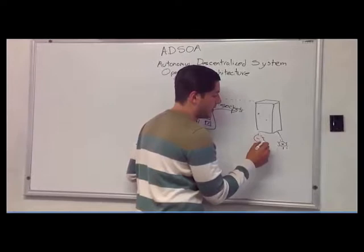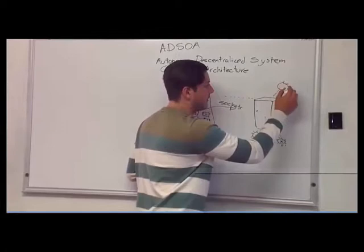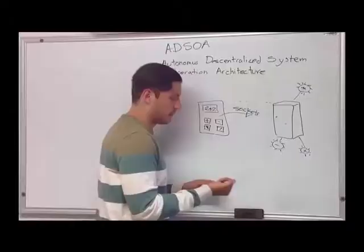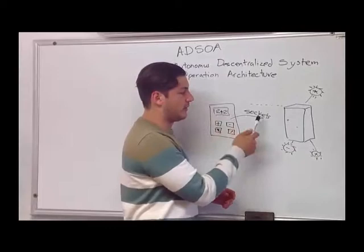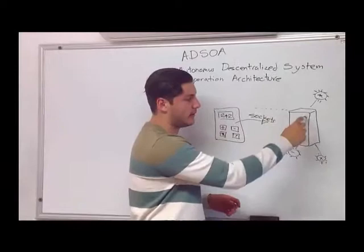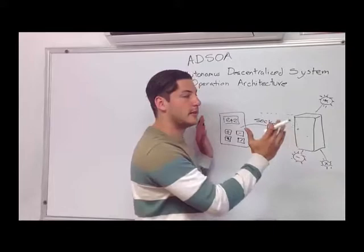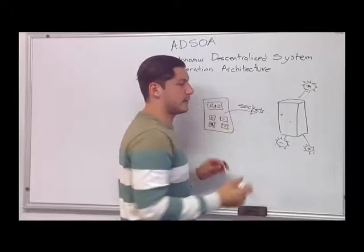This server has to have the addition cells, the subtraction cells, and also the division, as well as the multiplication. So we operate the 2 plus 2, and this calculator sends information via sockets to this part of the system.